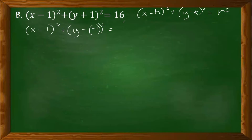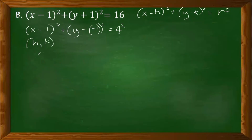For the group of y, because it is positive, we convert it to a negative, giving us y minus negative 1, squared. The right-hand side must be in the form r squared. Since 16 is a perfect square, we write it as 4 squared. We can now directly identify h, k, and the radius.